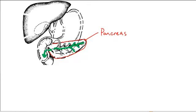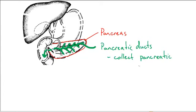So the little tubes are called the pancreatic ducts, and they simply collect pancreatic juices as they're made by the pancreas and deliver them to the small intestine.